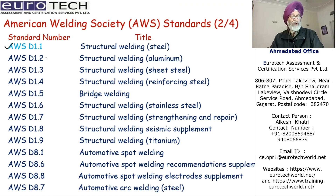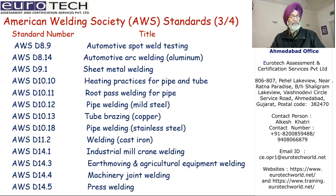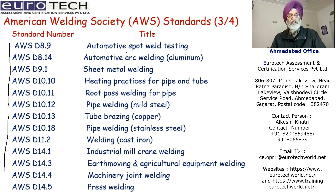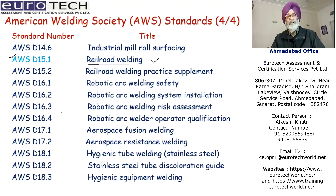There are more series — D1.1 through D1.5 and beyond — meant for different metals: aluminum, sheet steel, reinforcing steel, stainless steel, and so on. We also have AWS D15.1, which is primarily for railroad welding. These are the processes listed as far as AWS is concerned; the important ones have been marked. So this covers the American Welding Society AWS standards.